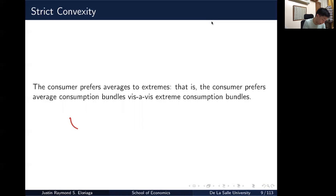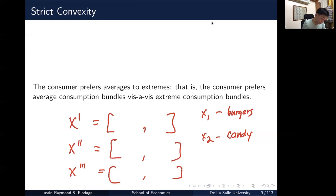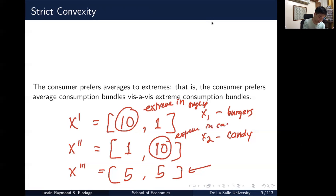So what do I mean by this? Say good 1 is burgers and X2 is say candy. So it would most likely be the case that if I had three bundles: bundle 1 contains 10 units of burger and only 1 candy, bundle 2 contains 1 burger and 10 candy, bundle 3 contains an average of the two which is like 5 and 5. So I would likely prefer bundle 3, compared to bundle 1 and 2 because bundle 1 is extreme in burgers, bundle 2 is extreme in candy.